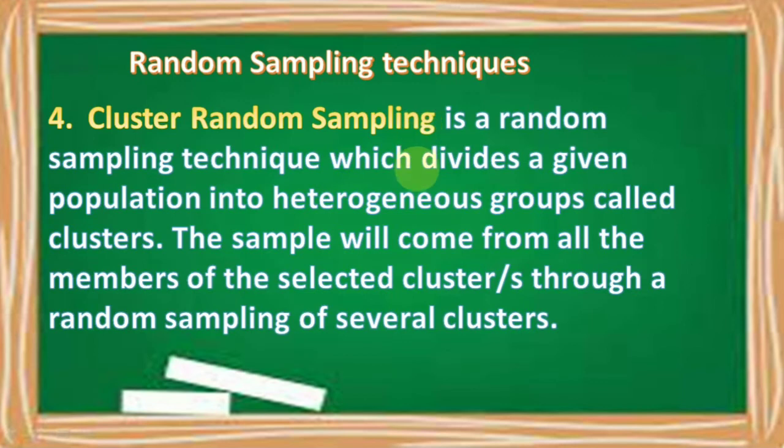The fourth type and the last type of random sampling technique is the cluster random sampling. The cluster random sampling is a random sampling technique which divides a given population into heterogeneous groups called clusters. The sample will come from all the members of the selected cluster or clusters through a random sampling of several clusters.